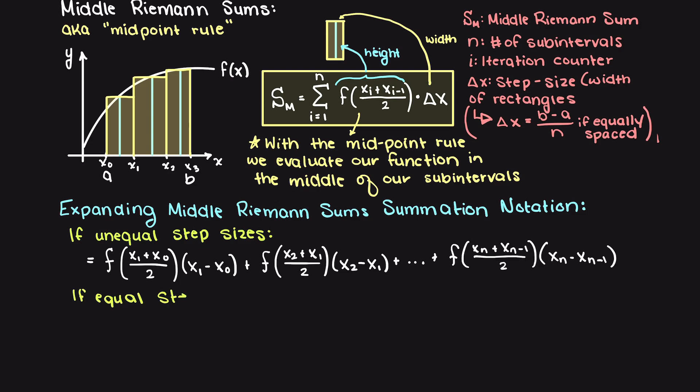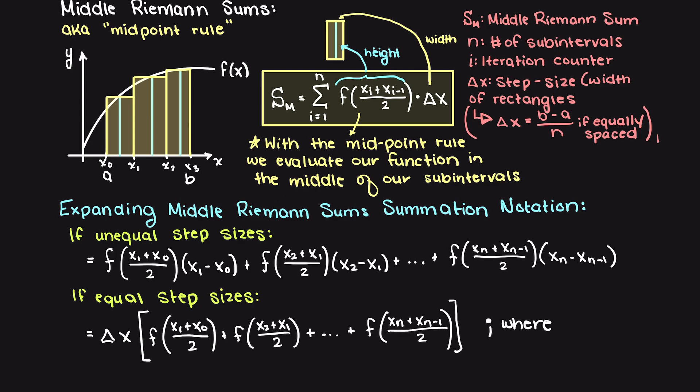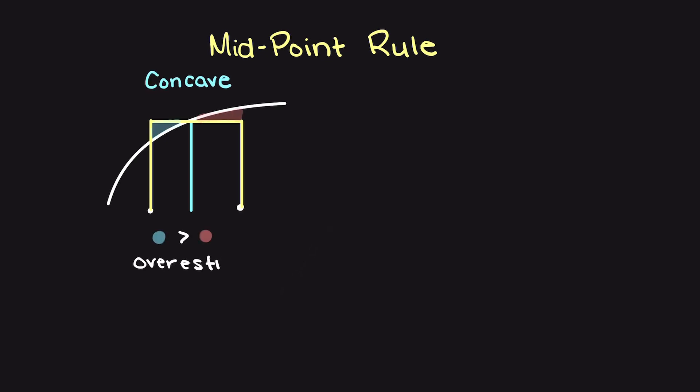If all of our rectangles here are taken to be the same width, we can again factor out this delta x term and move it to the outside of our summation term. One thing to note here about these types of Riemann sums is that they can both overestimate and underestimate the actual integral value, depending on the concavity and behavior of the function within each sub-interval.